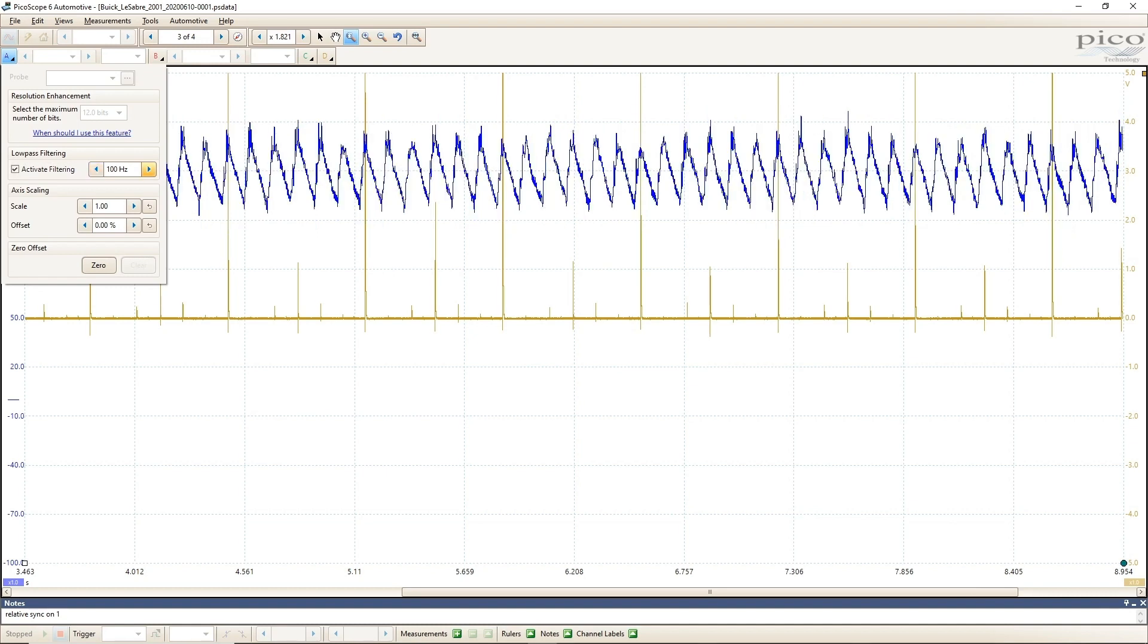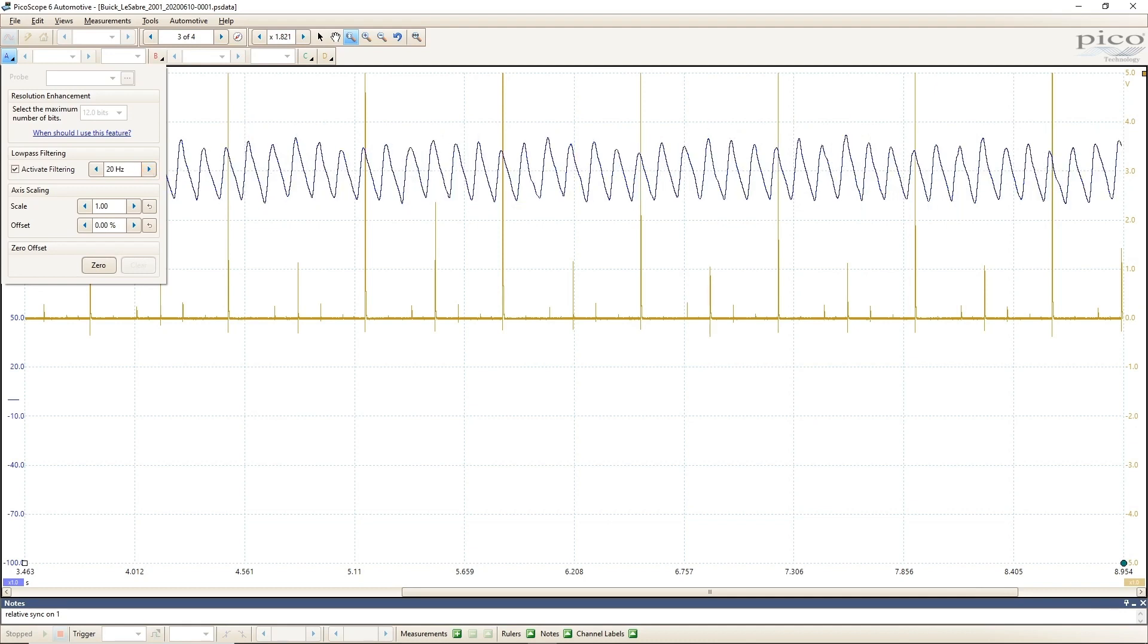If we drop the pass threshold down to 100 Hz from 1 kHz, the pattern smooths out even more. I can even go all the way down to 20 Hz and filter out pretty much all the noise. The drawback here is that this much filter can change the pattern so much that you might no longer be seeing an accurate representation of what has really happened. I can get away with it here because this is a relative compression capture, which is a very low frequency signal. The frequency here is only about 8 Hz. There is more than 5 seconds of time on the screen.